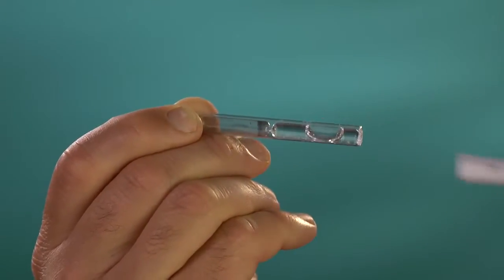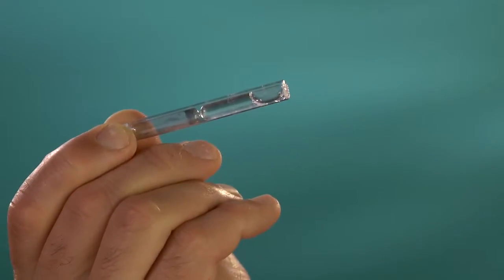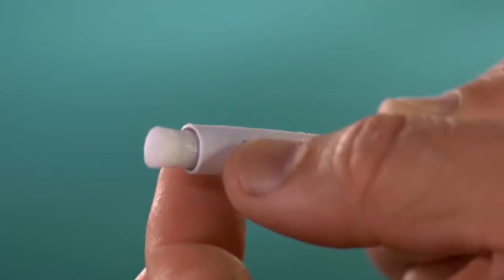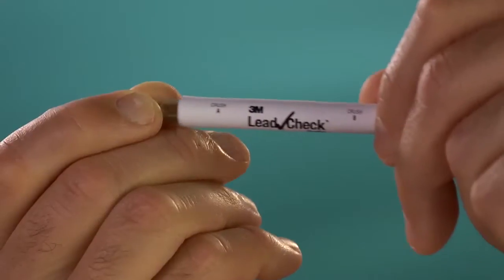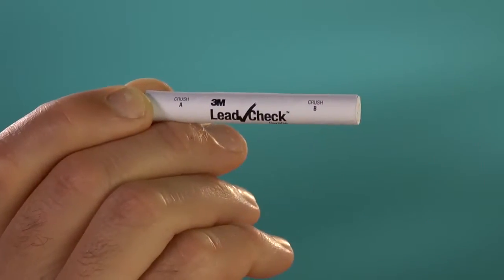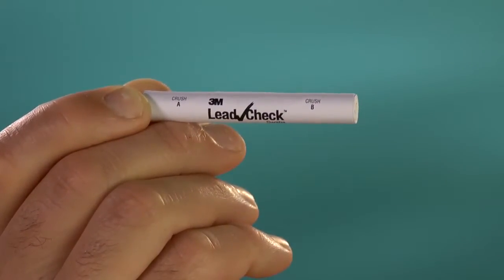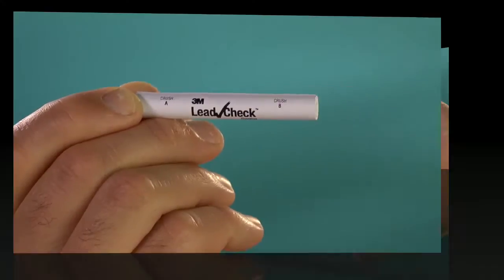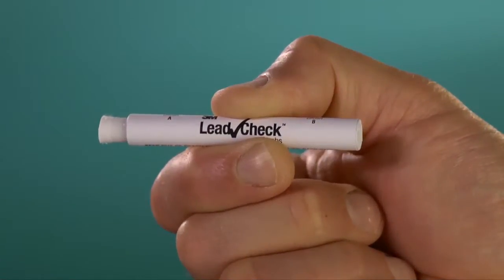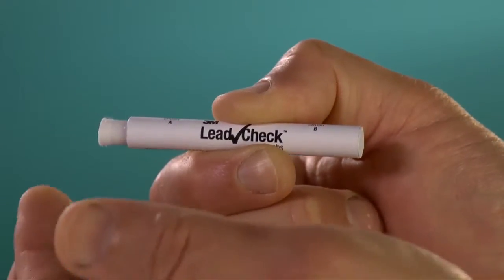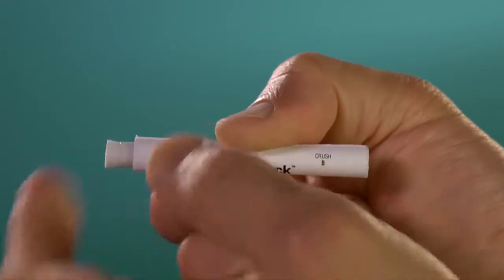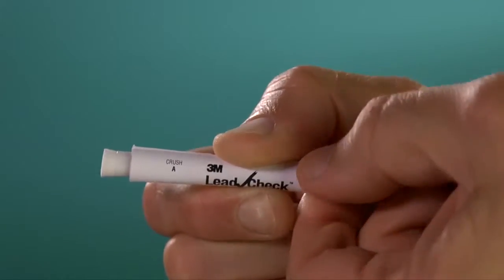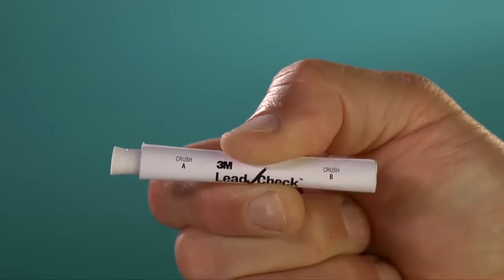Note that there are two separate glass ampules inside each 3M LeadCheck swab and that both must be crushed to activate the reagent liquid. Do not crush these ampules unless the cardboard cover is in place, completely covering both of the glass ampules. Now, activate the 3M LeadCheck swab by firmly squeezing each end at the points marked A and B on the cardboard cover until you can feel and hear the ampules inside being crushed.